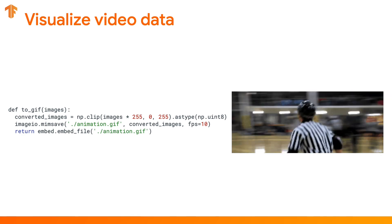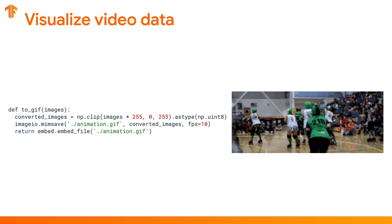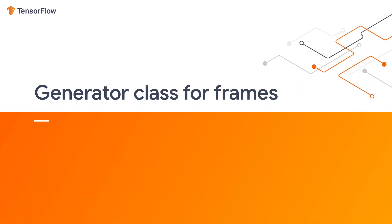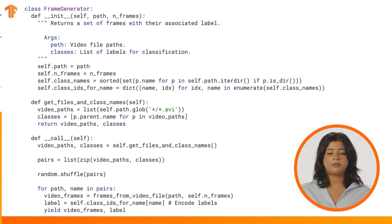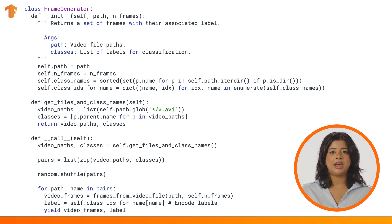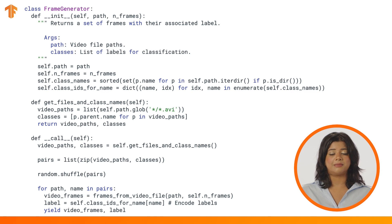Use the ToGIF function to create a visualization of some of the frames you've generated. Call the framesFromVideoFile function first, take the output of that, and place it into the ToGIF function.